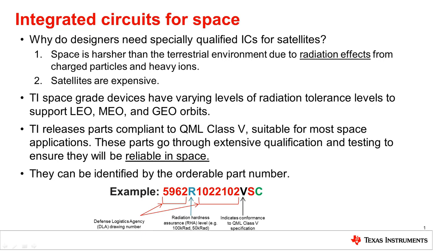The V in the part number indicates it is a Class V device. If you see another letter, like Q or M, that indicates a military part number not suitable for space. The last letter of the part number indicates the lead finish of the part — that could be solder dip or gold plate for most TI devices.